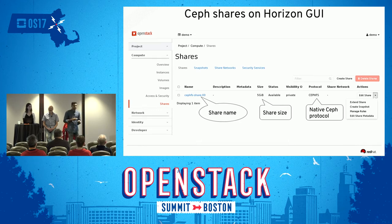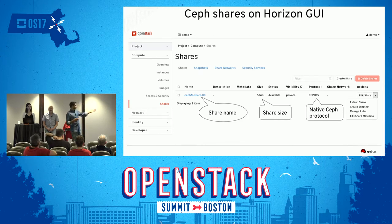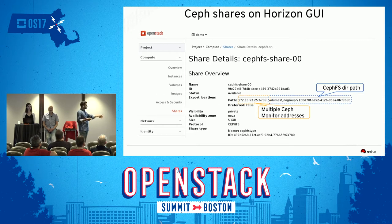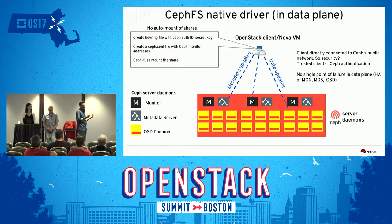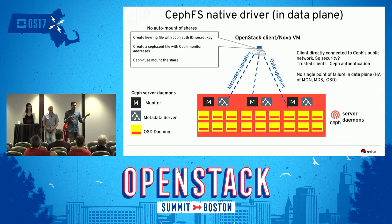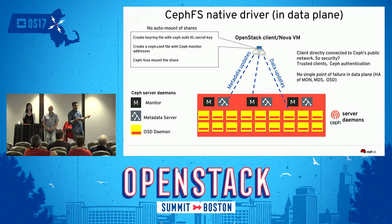The OpenStack user typically interacts through the Horizon GUI. In the dashboard snapshot, you can see a person has created a Ceph share, chosen the protocol as CephFS, requested a size of five gigabytes — it's been created and is available. He gets back a share location which is a combination of Ceph monitor addresses and the directory path. Then he asks for certain Ceph auth IDs to be given access to the CephFS share and gets back a secret key. Knowing all of this, he can now mount the share.